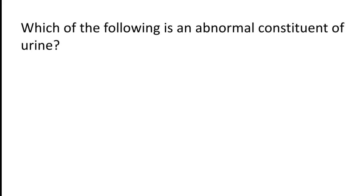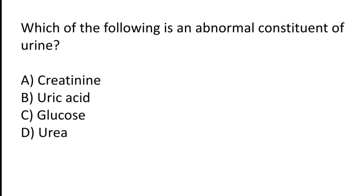Which of the following is an abnormal constituent of urine? Options: creatinine, uric acid, glucose, or urea? The correct answer is option C — glucose is an abnormal constituent of urine.